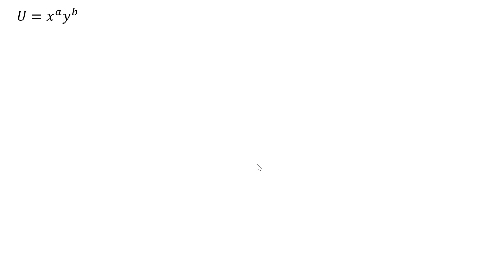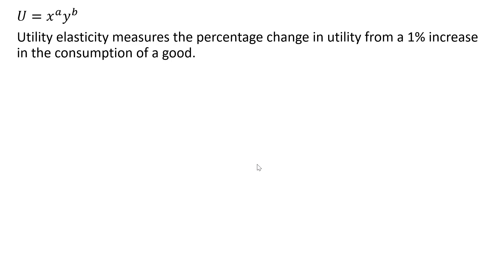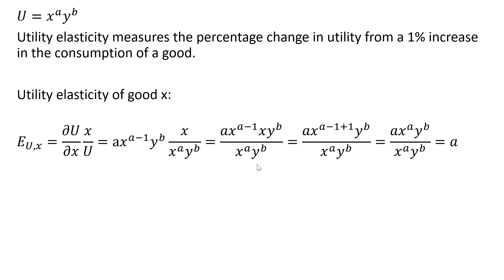Let's look at a more general example — a general format for a Cobb-Douglas utility function. The utility elasticity of good x is given as follows. Taking the partial derivative with respect to good x, the exponent on the x term comes down in front and we subtract 1 from it. That is then multiplied by x and divided by the utility function. Simplifying by adding up the exponents on x, the minus 1 and plus 1 cancel, leaving us with a.